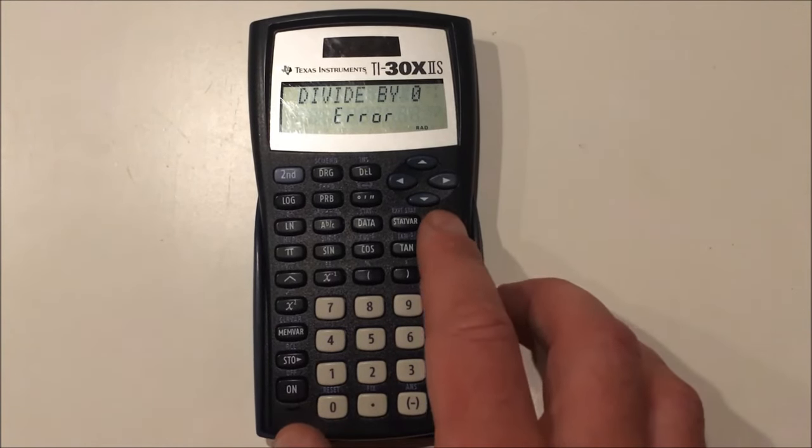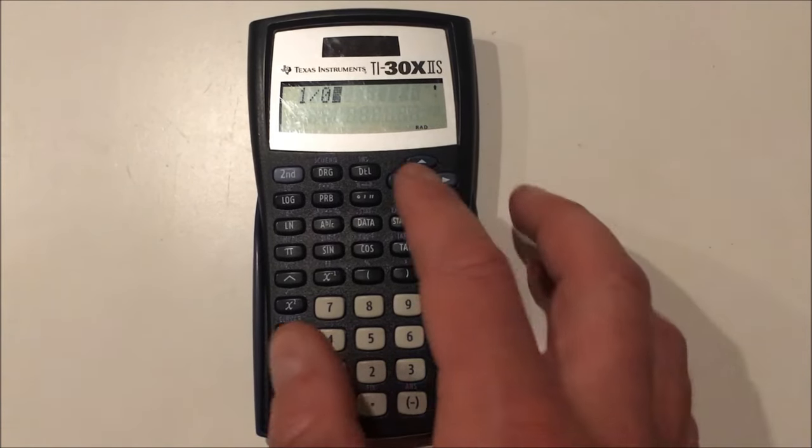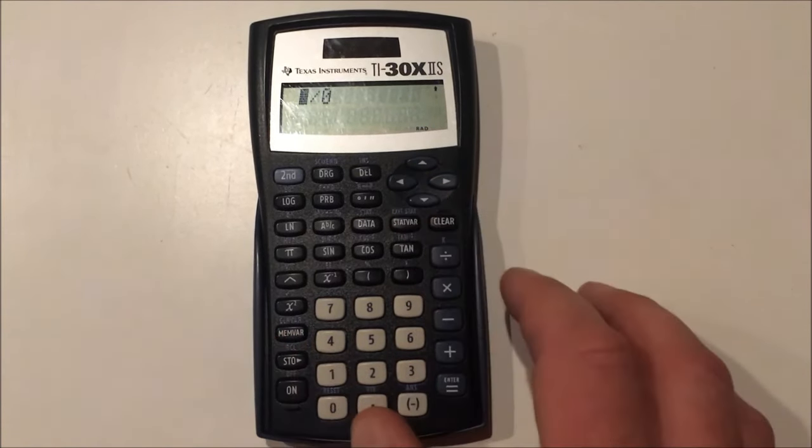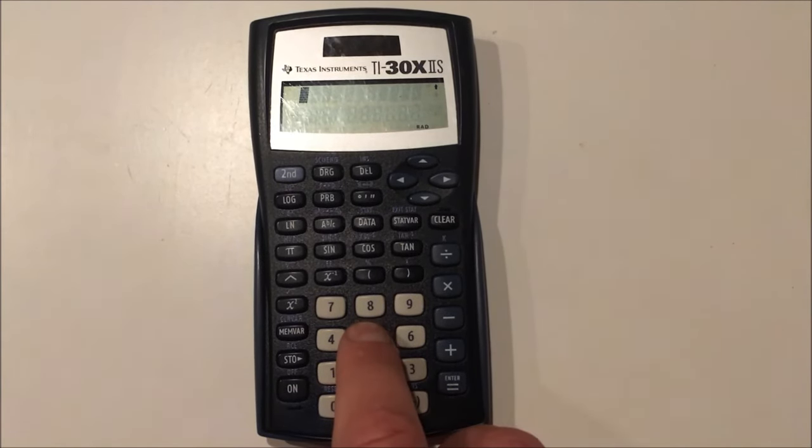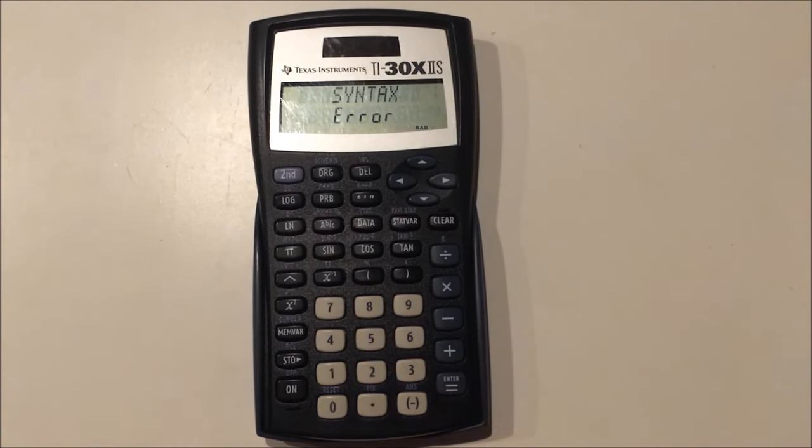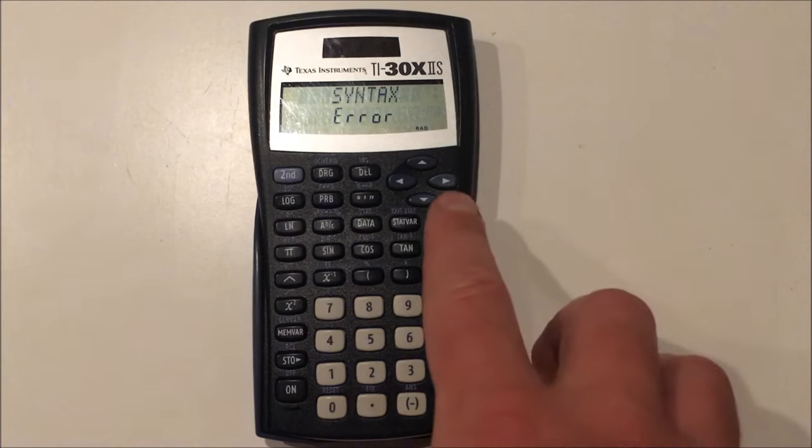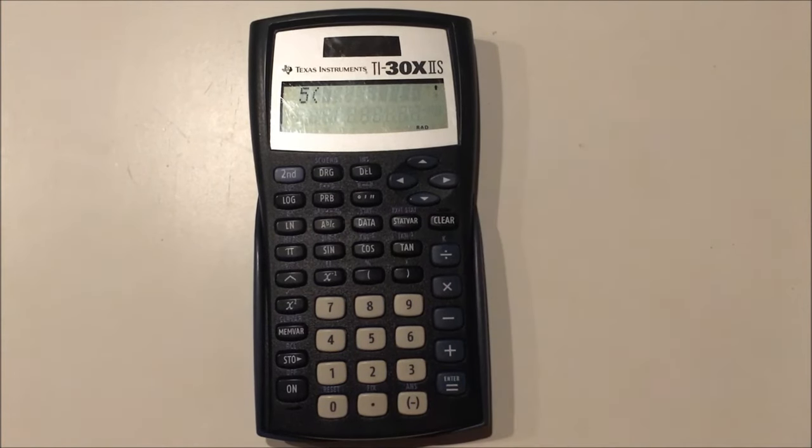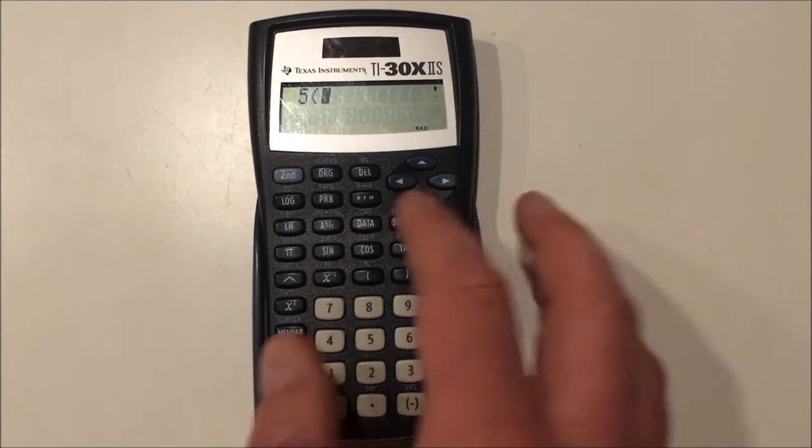Now, there's another type of error called syntax error, which can result from you using the wrong or incorrect notations that can't be read by the calculator. Such as, for example, let's say you're typing and your finger slips, and you press the parentheses button, and you don't close the parentheses or put anything after it. You get a syntax error. Now, if you want to figure out what happened, you just press clear on there, and it will take you to the expression, and you can find your error and fix it.